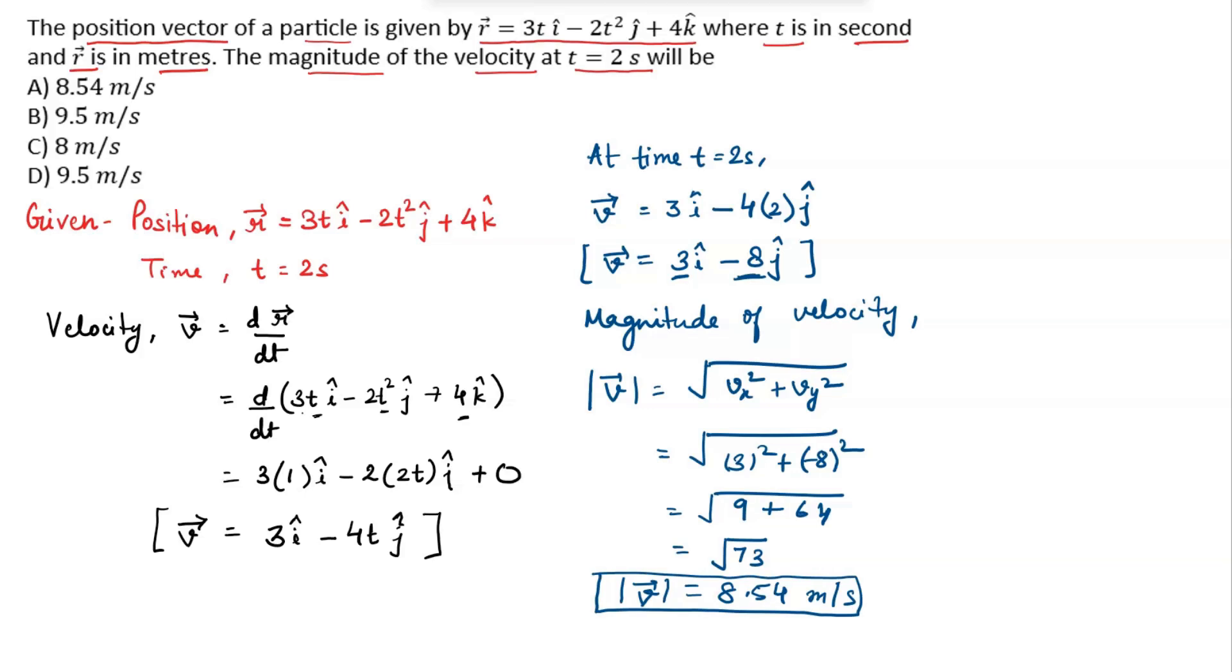So now, move to the options. Option A, 8.54 meters per second will be the correct answer.